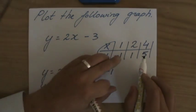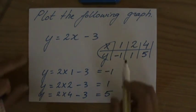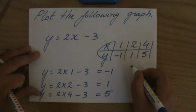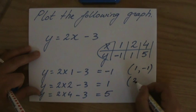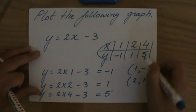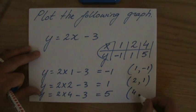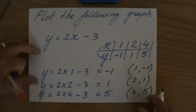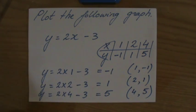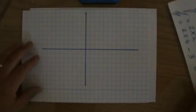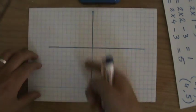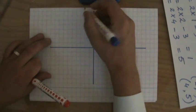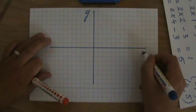So really, you can choose any number for x and you find the corresponding y coordinate. I have three points now. My first point is (1, -1), my second point is (2, 1), and my third point to check my workings is (4, 5). x is 4, y is 5.